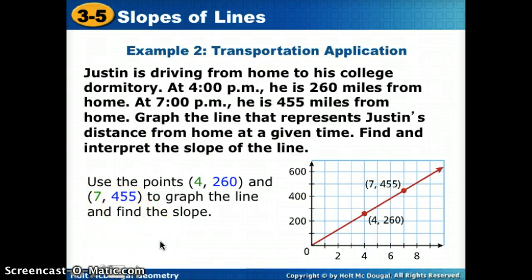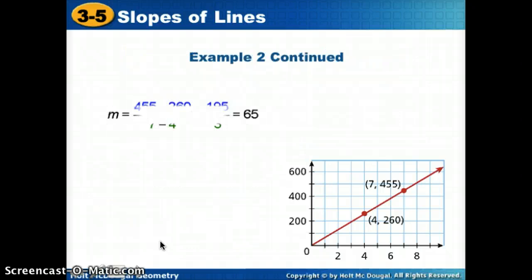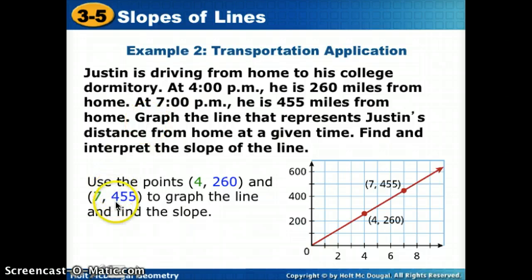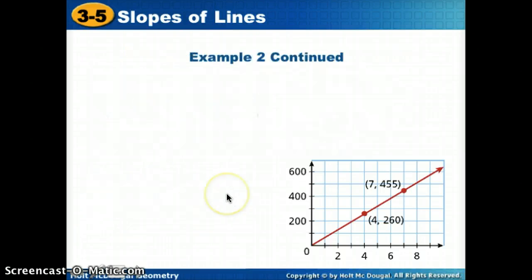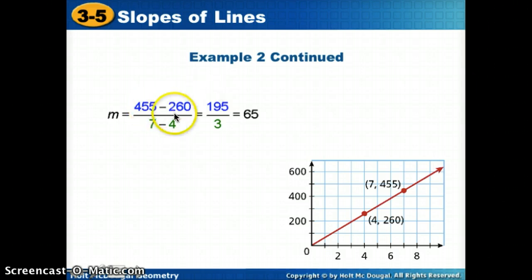So now we're going to find the slope between those two points by plugging into our formula. So we're going to say our change in y, so this y minus this y over our change in x, 7 minus 4. So when we plug that in and we simplify, so 455 minus 260 gives us 195. 7 minus 4 gives us 3. If we divide that in our calculator we get 65.